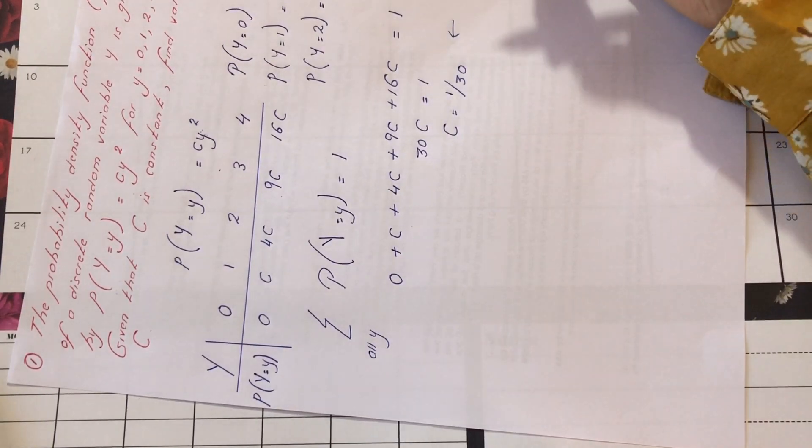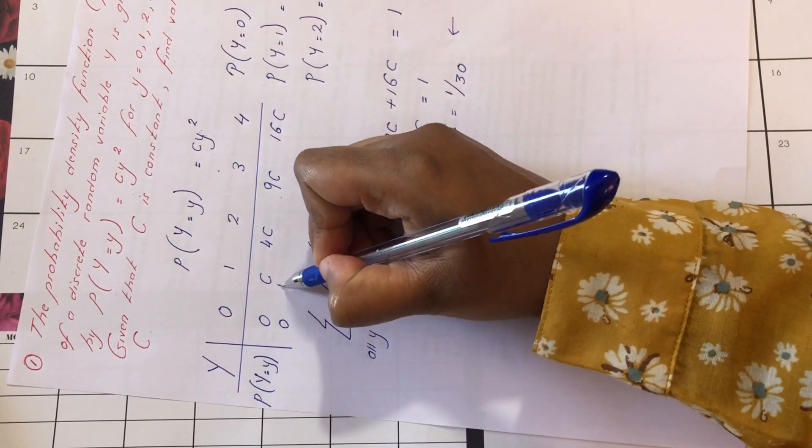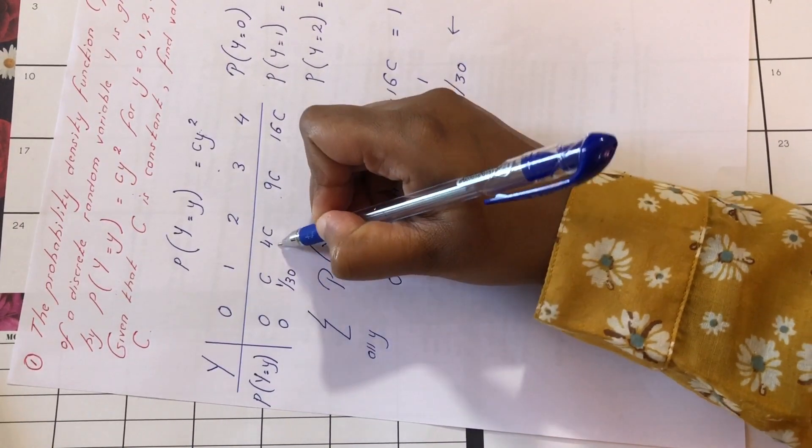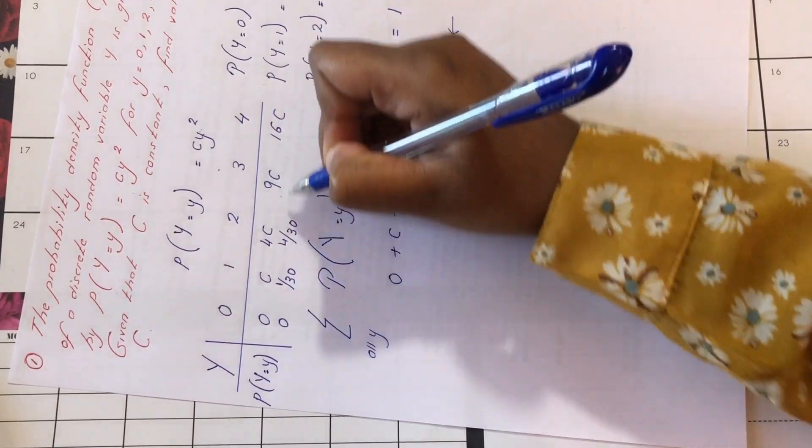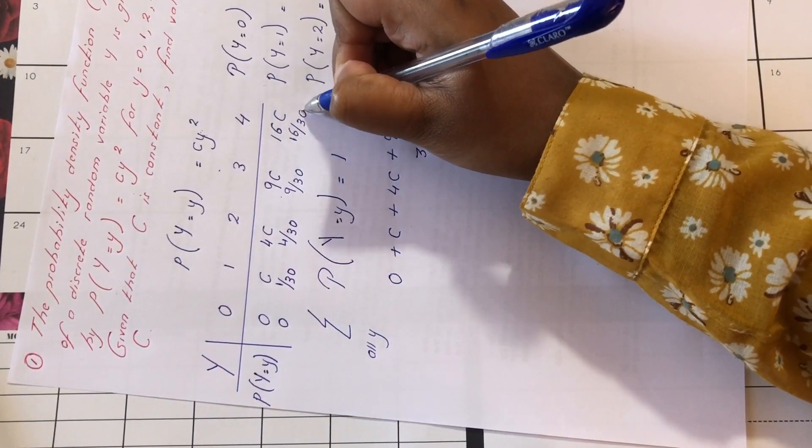So there we have it, the value of c. So which means that 0, 1 over 30, 4 over 30, 9 over 30 and then we have 16 over 30.